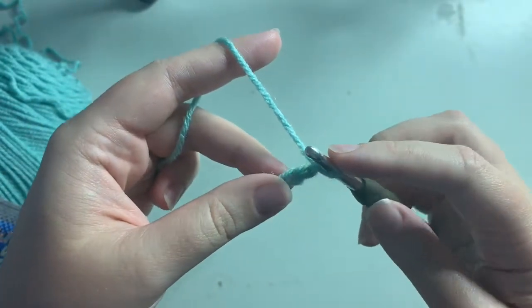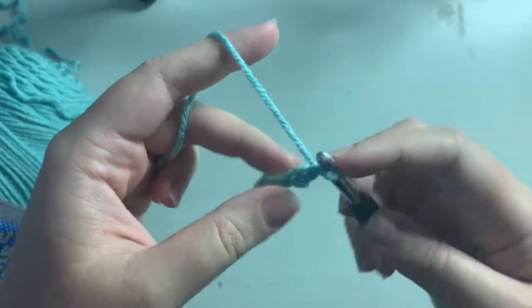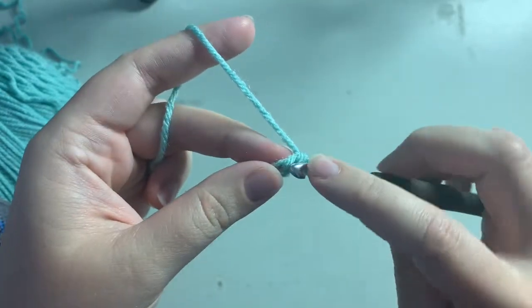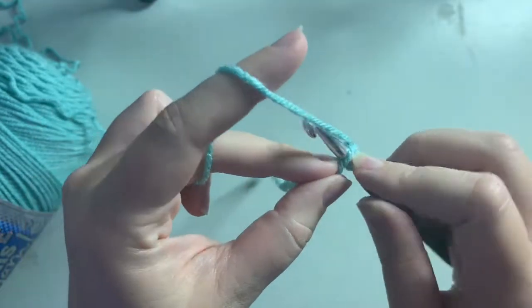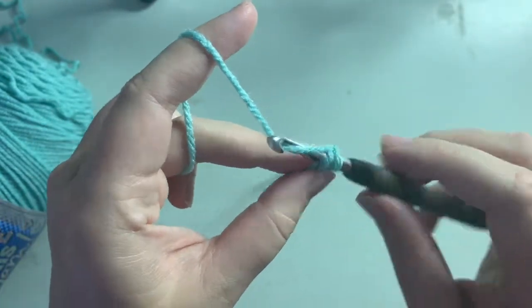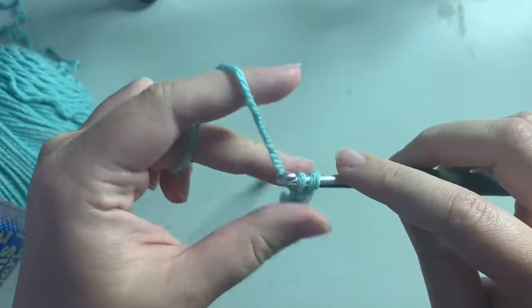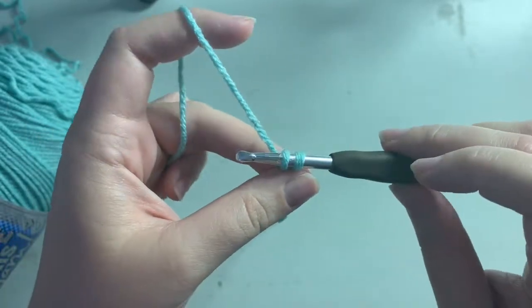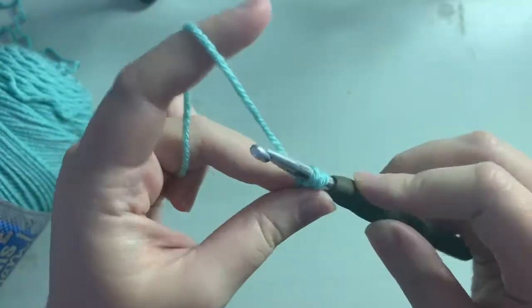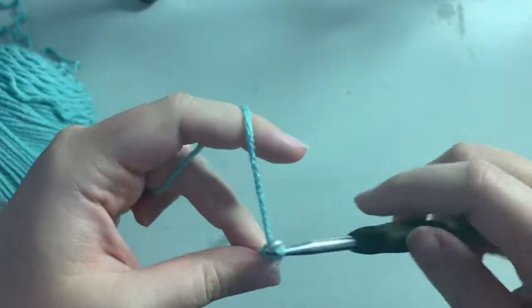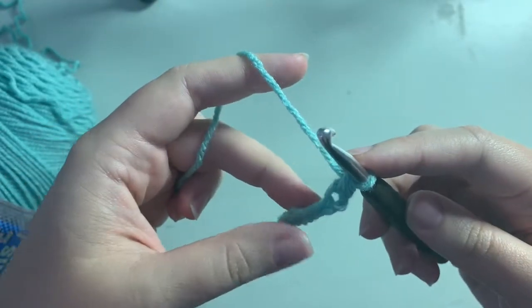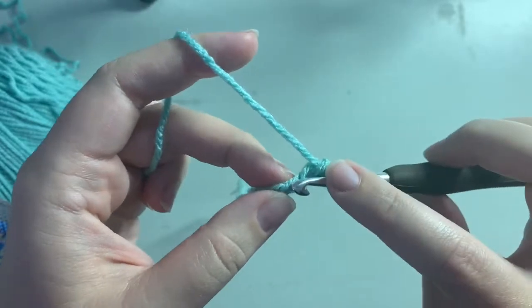We're gonna take our hook, skip this first chain, go into our second chain, yarn over, pull up a loop - that's what that's called when you pull it through like that. Then we're gonna yarn over again and pull through both of the loops on our hook, and that's a single crochet.